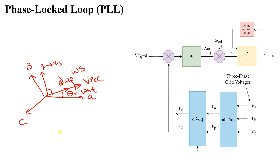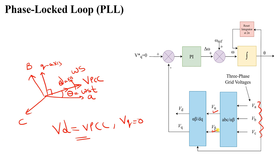As you can see, VD is exactly equal to VPCC if we use the power-variant transformation, and VQ equals zero. What I am doing here is taking the three-phase voltages VA, VB, VC at the grid side, converting from ABC to alpha-beta to get V_alpha and V_beta, then transforming to VD and VQ in the DQ frame. However, to do this transformation we need an angle theta, which I would like to estimate.